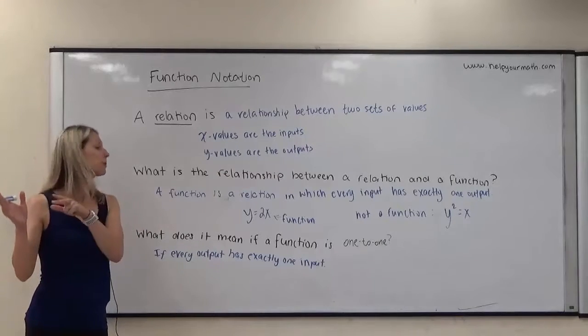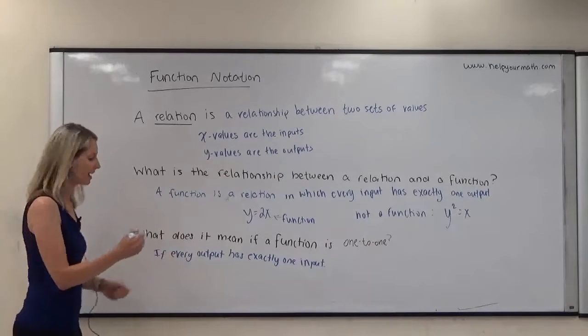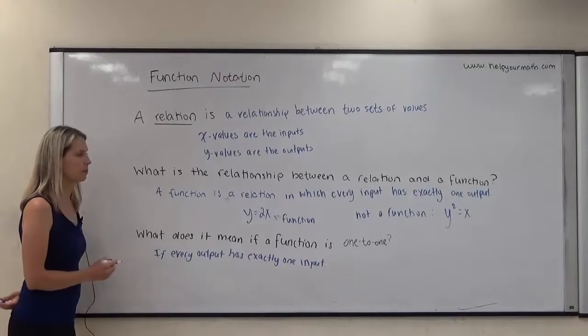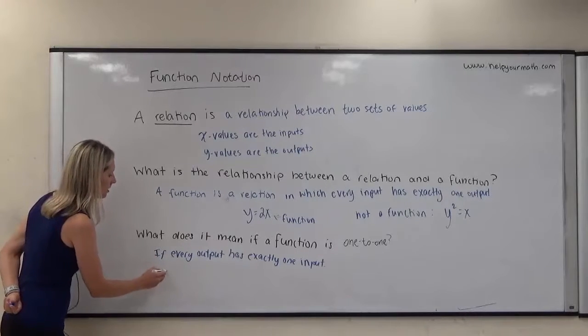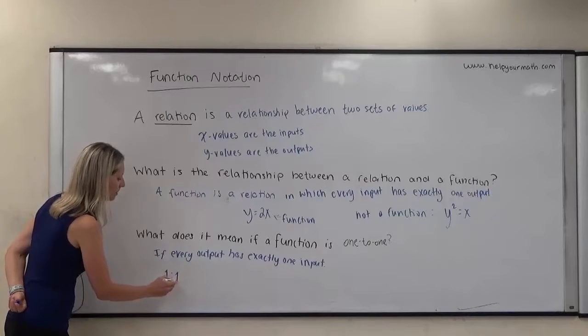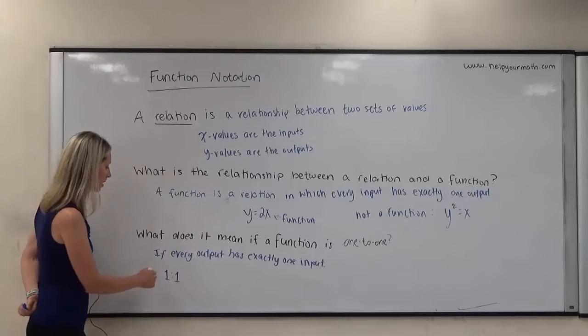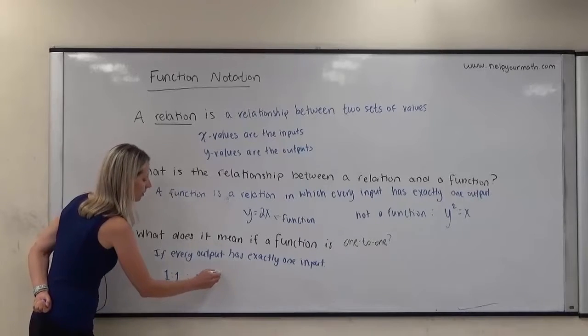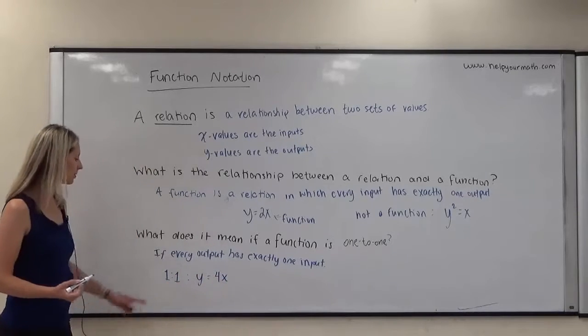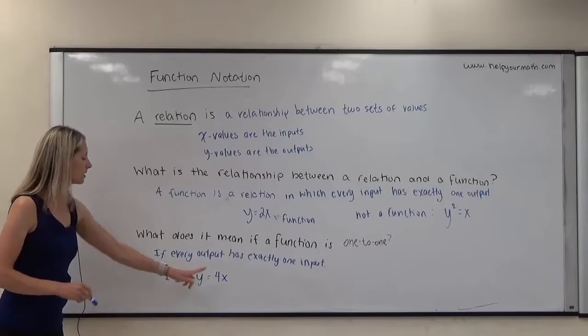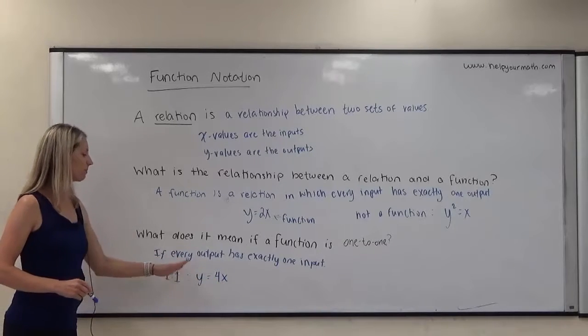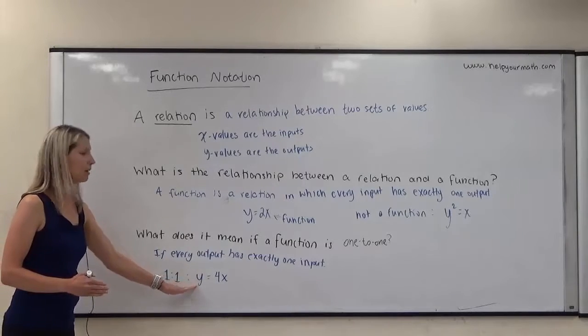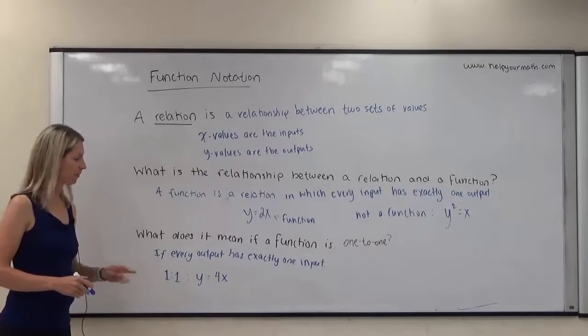Just to show you an example between the difference between a function that is 1 to 1 and one that's not. The notation for 1 to 1, we do 1 colon 1, and we read this 1 to 1. One that is 1 to 1, an example could be y equals 4x. Y equals 4x is 1 to 1, because no matter what value I plug in for x, I'm always going to have a unique y. And also, for any y value, there is only exactly one unique x.